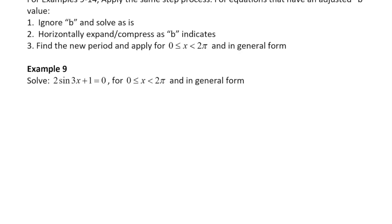Our first example right here — you'll notice there's something we hadn't seen from the previous day: when you have something between your trig ratio adjusting the period. In this case, we have 2 sine 3x plus 1 equals 0. We hadn't seen anything other than just having a regular 1x in front.